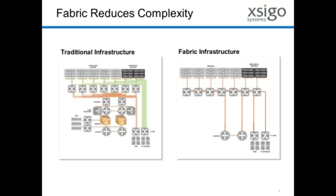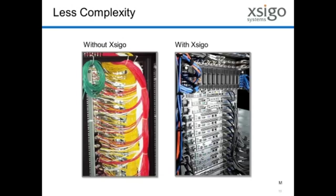A fabric infrastructure should be significantly flatter with fewer layers — in the Seago case, it's only one layer in between the servers and the core fiber channel and core Ethernet. It is significantly simpler in terms of its east-west traffic and is a much faster underlying fabric. The point here is a fabric is a simple one layer of infrastructure, and if you look at it in terms of what it does in your infrastructure, this is kind of a simple before-and-after scenario.